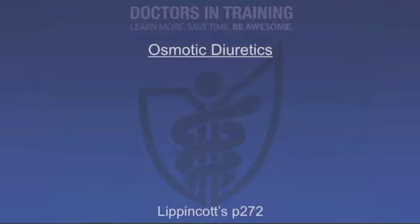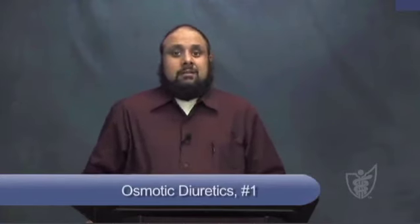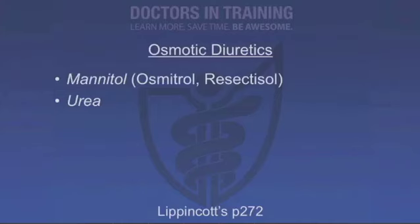Let's talk about osmotic diuretics next. Most textbooks will put these last, but I put them second because that's where they fit anatomically — they work in the proximal convoluted tubule and the descending loop of Henle. Both areas are freely permeable to water, so any osmotically active agent that's filtered but not reabsorbed will cause water to be retained in these segments and result in a mild diuresis.